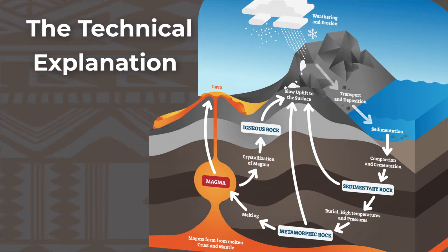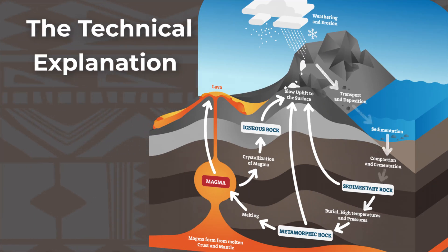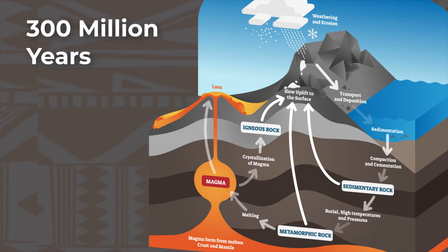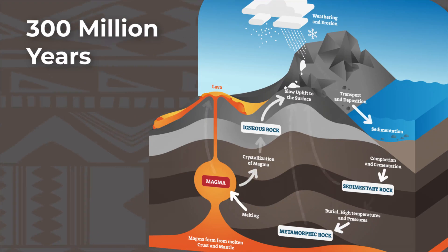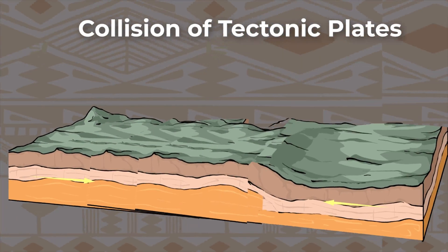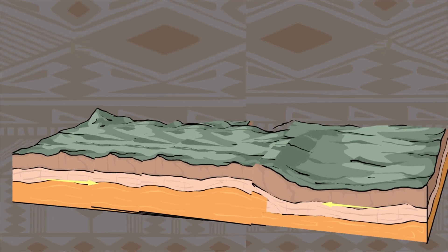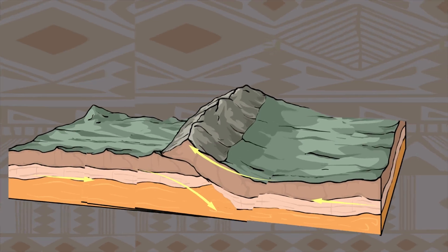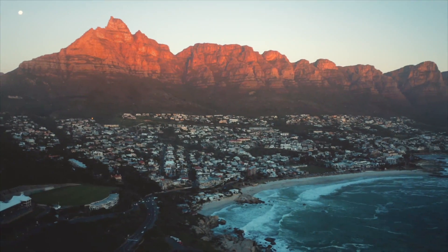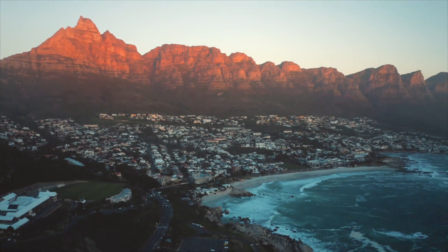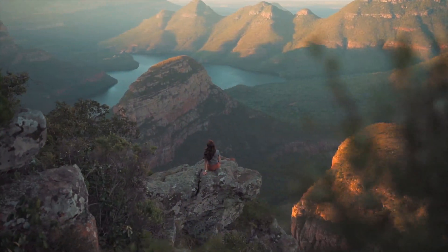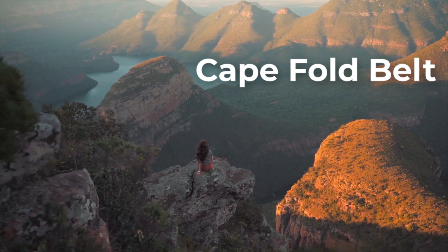A more technical explanation is that Table Mountain is a sedimentary rock formation, meaning it was formed by or from deposits of sediment that was laid down in layers over a period of about 300 million years. As tectonic plates moved ever so slowly but ever so present, a collision of the plates about 250 million years ago upheaved the earth's crust around the southwest corner of Africa, scrunching together multiple layers of solidified sediment about 5 kilometers thick in an elastic band-like effect. The result was a massive chain of mountains known today as the Cape Fold Belt, stretching 150 kilometers north and 700 kilometers east of Cape Town. What many people don't realize is that Table Mountain forms part of the much larger mountain chain called the Cape Fold Belt.